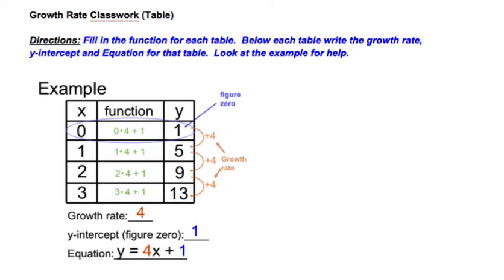Here's the example that we're going to work through together. What you are given is a table where x is 0, 1, 2, and 3. Notice your x values go up by 1 every time. From 0 to 1, 1 to 2, and 2 to 3, you're going up 1 each time. Think of that as going from figure 0 to figure 1 to figure 2 to figure 3.